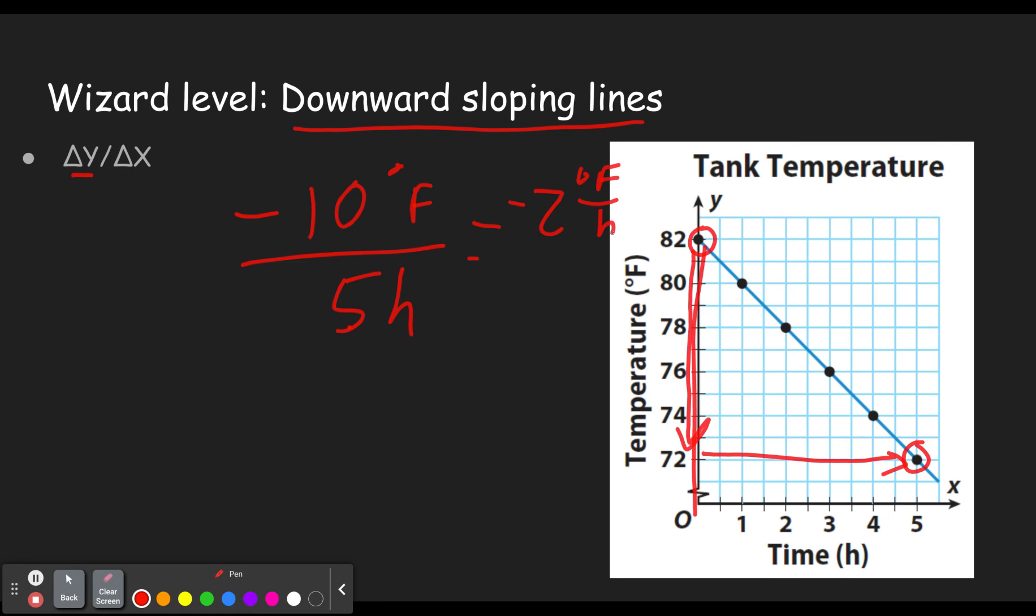And so we get negative two degrees Fahrenheit per hour. So this one's cooling down two degrees Fahrenheit per hour. And no matter which of these dots you chose, you would have gotten the same answer.